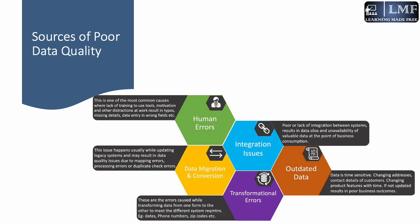Third is transformational errors — errors caused while transforming data from one form to another to meet different system requirements. Like migrating data from legacy systems, sometimes you need to transform data based on the consumption system's requirements, such as dates in a different format, phone numbers, or zip codes. This is also a primary cause of poor data quality.